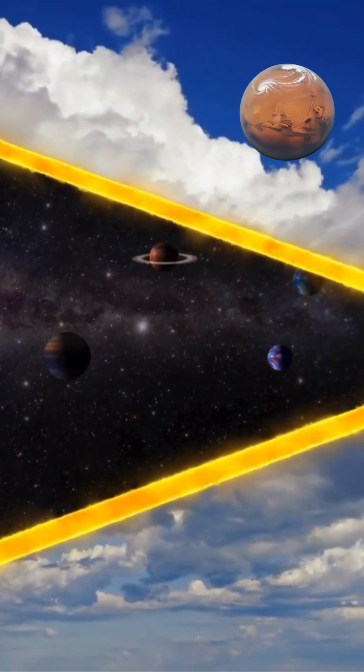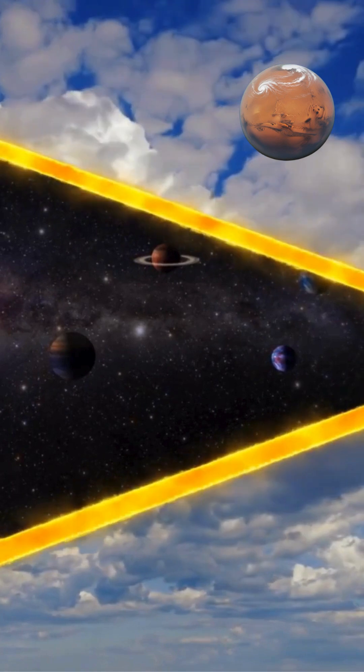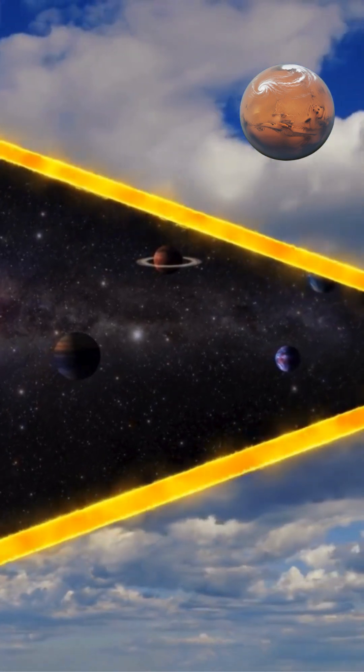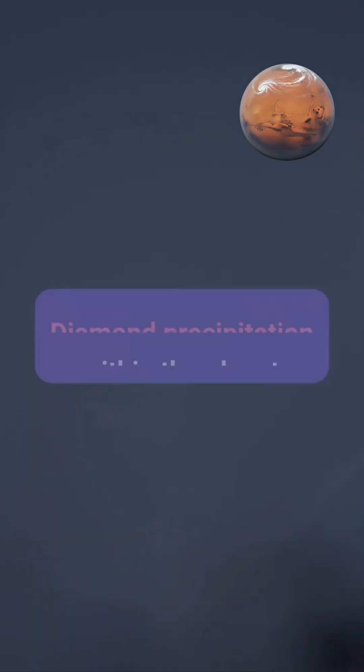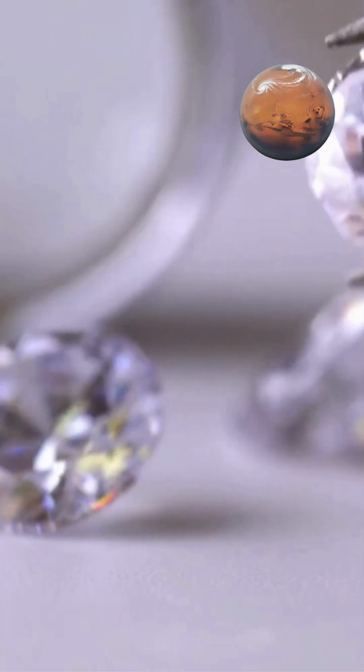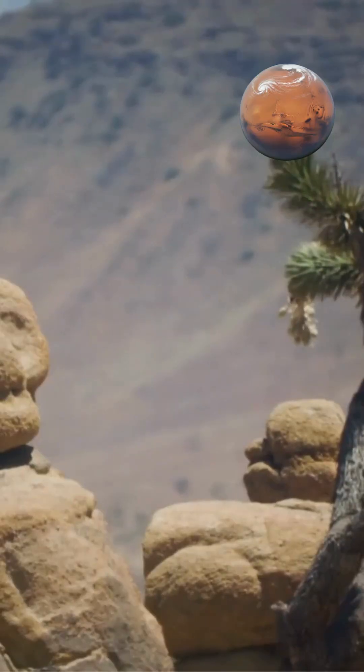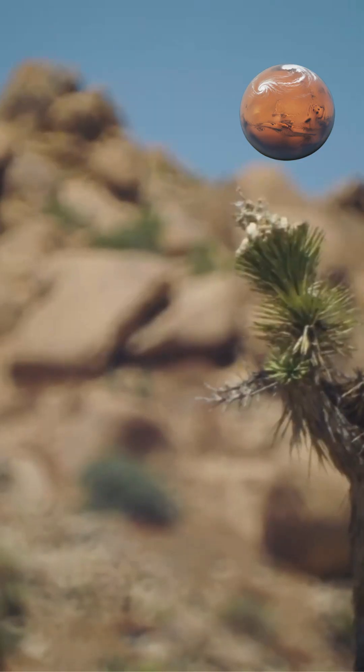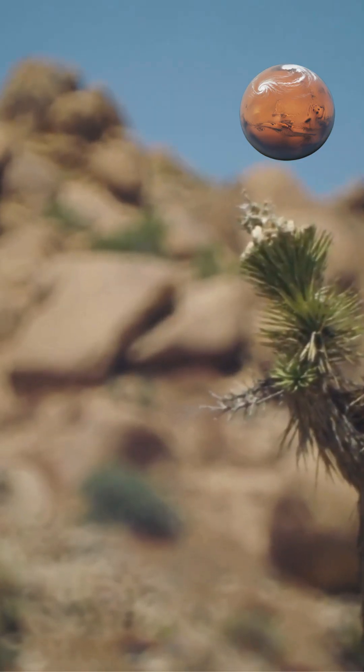Interestingly, Neptune's internal heat generation may be enhanced by an unusual process: diamond precipitation within the planet. As diamonds fall through the atmosphere, they release gravitational energy converted to heat through friction, potentially contributing to the planet's overall thermal output.